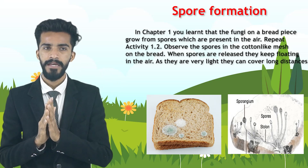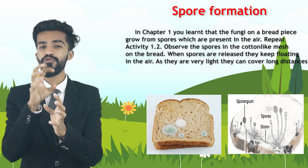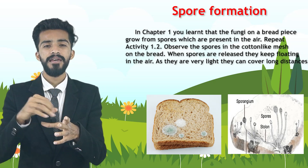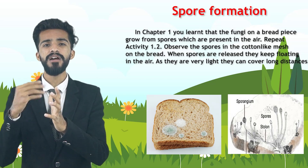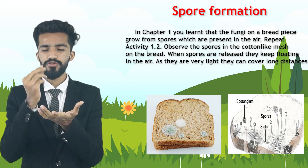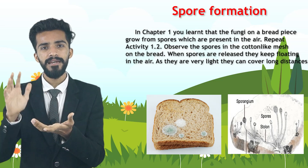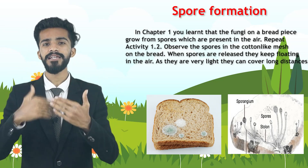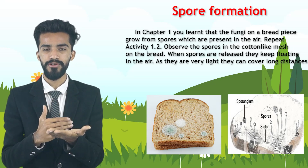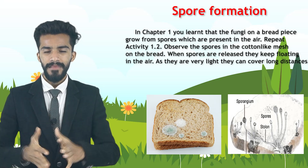This round structure is called the sporangium. The spores come out of the sporangium of the fungi. They are very light in weight so they can travel very long distances — they float in the air and keep moving further. If fungi grow on one bread kept nearby, after some time fungi will appear on another bread kept beside it as well.